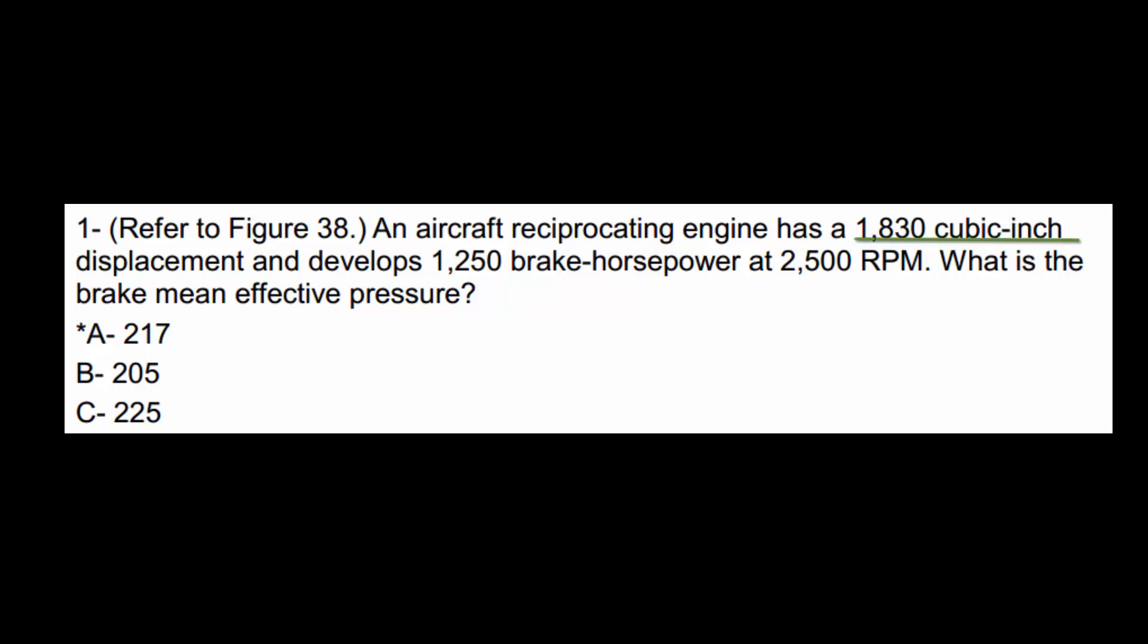So let's go back over this. 1830 cubic inch engine. Develops 1250 brake horsepower at 2500 RPM. So what is the BMEP, brake mean effective pressure?